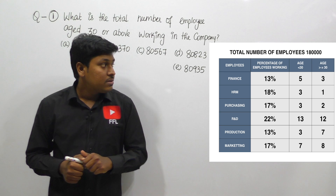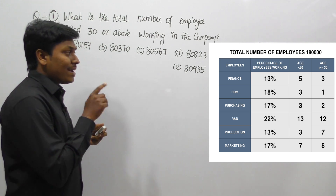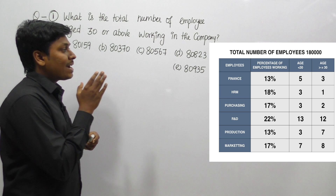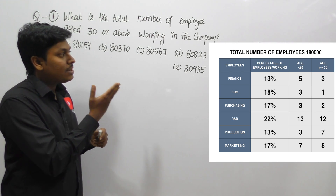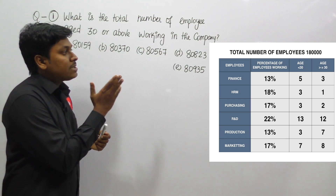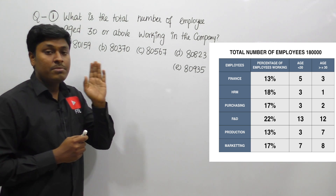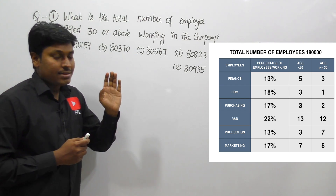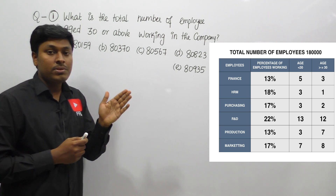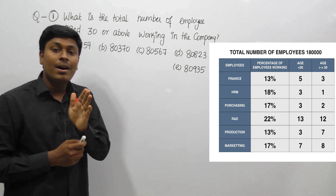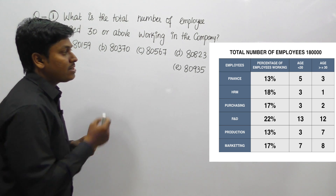Let me move on to DA number 11. Here they have given a table chart. At the top of the table chart, the total number of employees is 180,000. These employees are working in various fields: finance, R&T, purchasing, production, and marketing. The second column is percentage of employees working. The third and fourth columns are most important — the ratio of their ages. The third column is employees less than 30, and the fourth column is employees equal to or greater than 30.